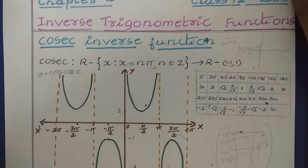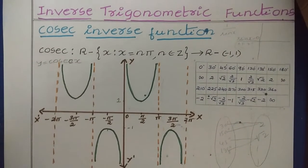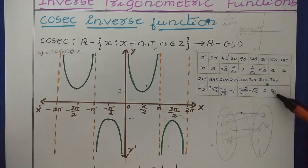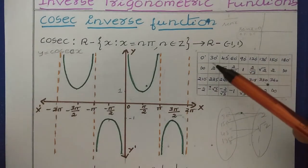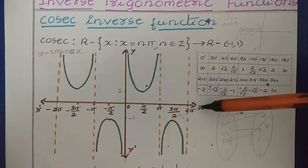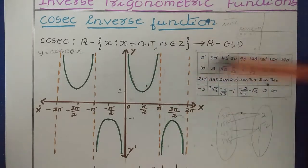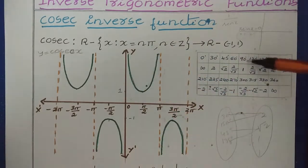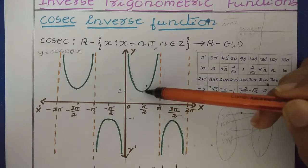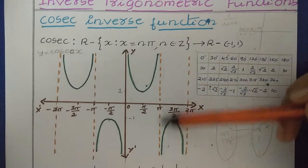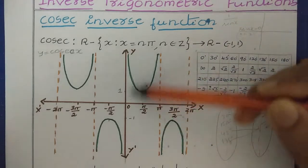Now, I have taken the table of the Cosec Function. Based on this, we can plot the graph of the Cosec Function. This table has values starting from 0 to 360 degrees. Let us plot the graph. We have the x-axis and y-axis. For 0 degrees, the value is infinity. For 90 degrees, the value is 1. For 180 degrees, the value is again infinity. So these dotted lines represent the infinity values.